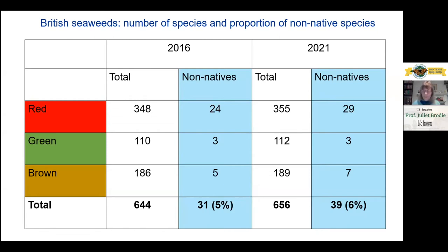Now let's move on to Britain. How many species of seaweed are there in the world? About 12,000 species have been identified, but we think there's probably double that. A few weeks ago I was doing a Red List assessment with colleagues. If you're not familiar with the Red List, it's an international method of assessing the threat that species are under, and in order to do that you need a very good species list.